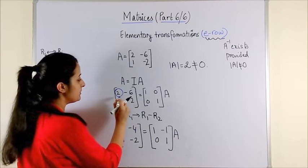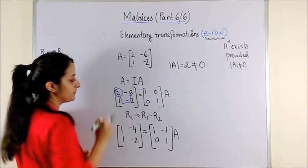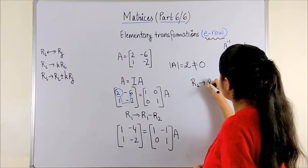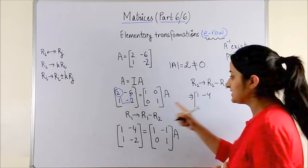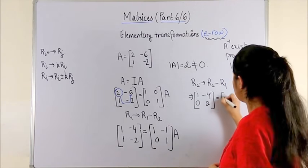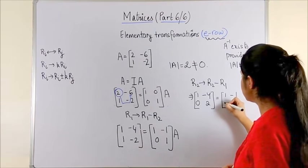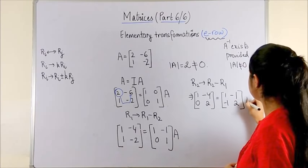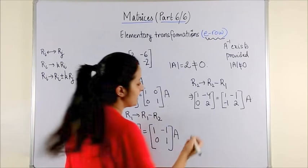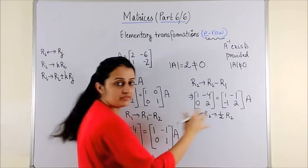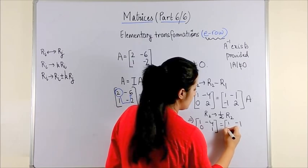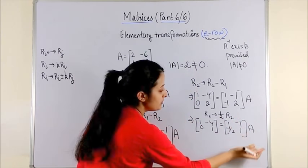Next, we target making A21 equal to 0. We say row 2 is row 2 minus row 1. The first row stays as it is. Row 2 becomes 0, and minus 2 plus 4 makes it 2. On the identity side, first row stays as it is; this becomes minus 1 and 1 minus minus 1, which is 2. Next, we target this element 2 and change it to 1 by multiplying row 2 by half throughout. This gives 1, minus 4, 0, 1, with the identity becoming minus half and 1.